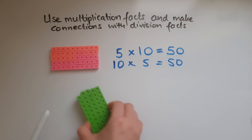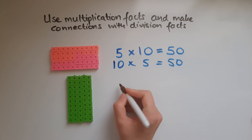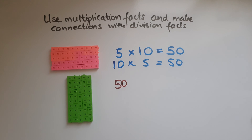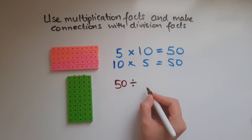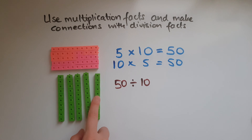Now I'll use the same number of cubes — 50. So that total is still here. What am I going to do with these 50 cubes? I might decide to share them into groups of 10, giving 10 to each person, and see how many people can get 10. If I divide by 10, I get 1, 2, 3, 4, 5 — so the answer is 5.